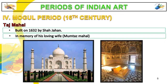Mughal Period, 16th century. Mughals contributed to the enrichment of Indian culture in painting and in architecture. The most splendid example is the Taj Mahal, built in 1632 by Shah Jahan in memory of his wife.